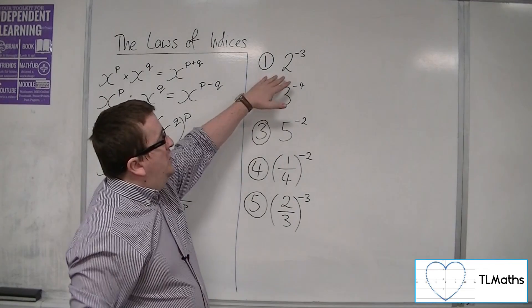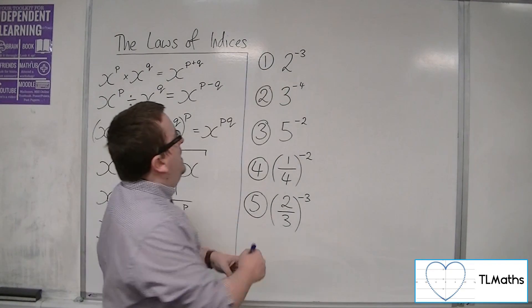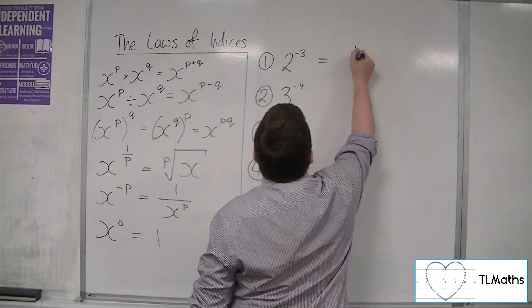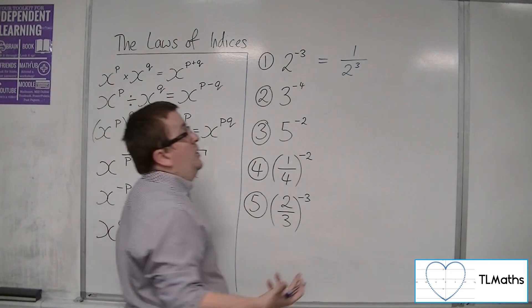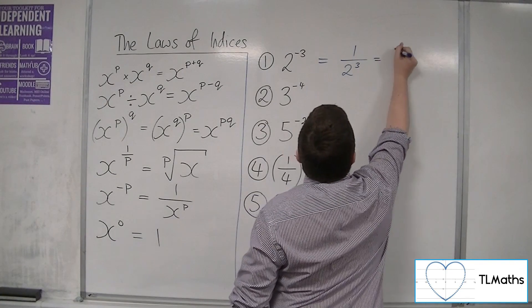So that's telling me that 2 to the minus 3 is 1 over 2 to the 3, or 1 over 2 cubed. And 2 cubed is 8, so this is just 1 eighth.